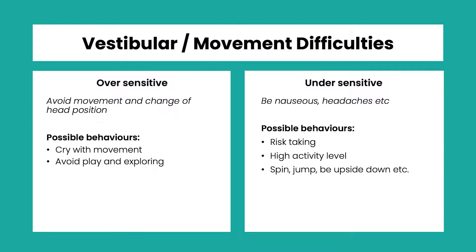If they are over-sensitive — with a small glass — they don't need much movement sensation before feeling overwhelmed. They might avoid movement, avoid changing their head position, get upset or cry with movement, avoid play and exploring, or feel nauseous and complain of headaches after movement. If under-sensitive — with a big glass — they struggle to register movement. You might find a child with very high activity levels, constantly spinning, jumping, and hanging upside down, trying to fill that glass and get as much vestibular information as possible.